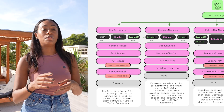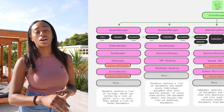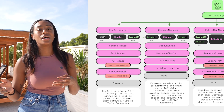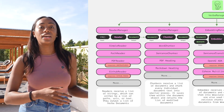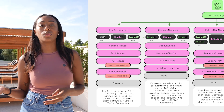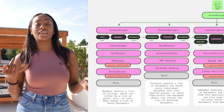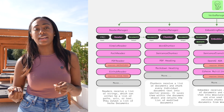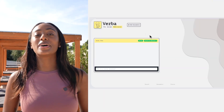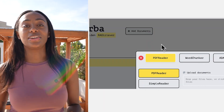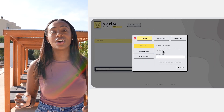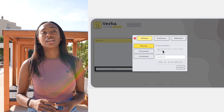It's also taking in PDFs as an option for you to load in your custom data and start chatting with it in a quick RAG application. Verba 0.3 is going to allow you to upload data directly on the UI.